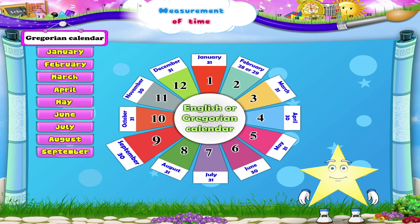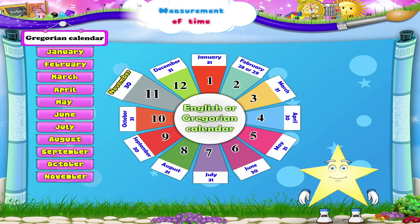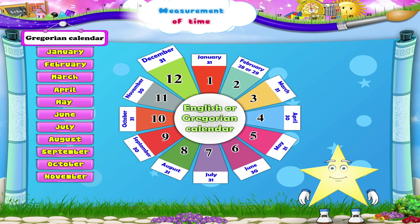September has 30 days; it is the ninth month. Can you tell me the tenth month? Yes, it is October. October has 31 days. The eleventh month is November. How many days does November have? Yes, 30 days. Which is the last month of the year, Starry? Yes, the twelfth month of the year is December; it has 31 days. Let us repeat the names of the months in order, Starry.